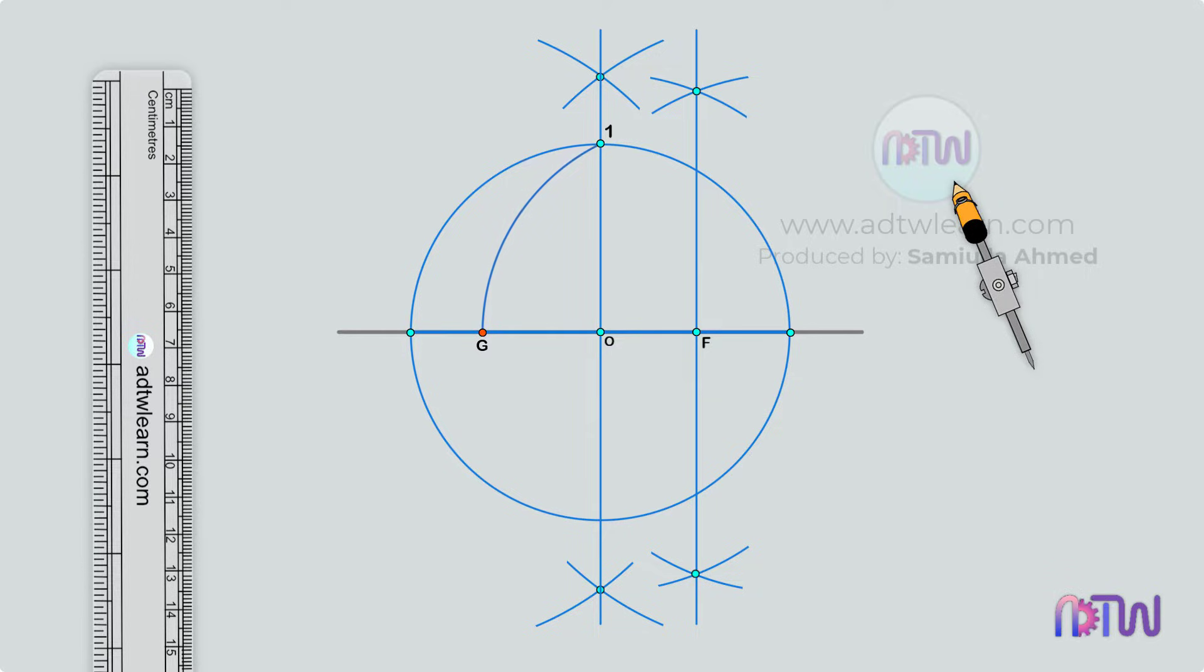After this, using a compass take the distance between point 1 and point G, and cut arcs on the circumference of this circle. Using the same length, place the compass at these points and cut arcs on the circumference.